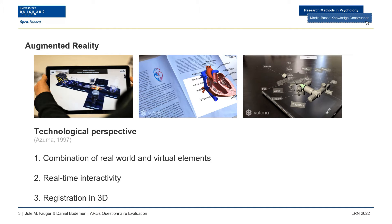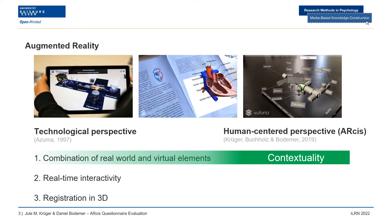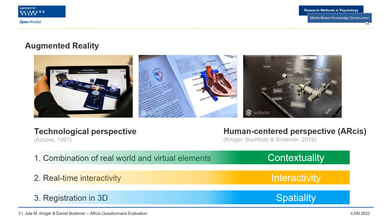Azuma describes three characteristics of AR systems: combining real-world and virtual elements, being interactive in real-time, and registering virtual elements in three dimensions inside the real world. Three characteristics from a human-centered perspective are contextuality, describing the simultaneous perception of real and virtual elements in AR; interactivity, describing physical, virtual, and mediated physical-virtual interaction unique to AR; and spatiality, describing the spatial perception of virtual elements inside the 3D real world.